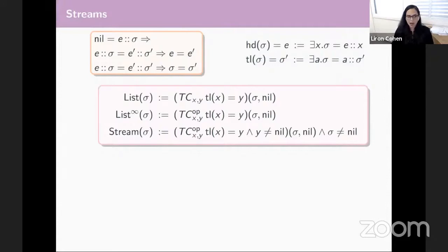If we want to extend and also consider both finite and infinite lists, we can simply take the TCOP of that same formula. And if we just want to consider streams, just the infinite lists, we simply require that at every step of this decomposition, we never reach nil, which forces us to be in the case of an infinite sequence.